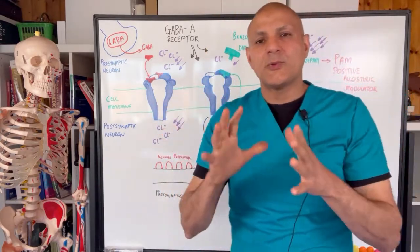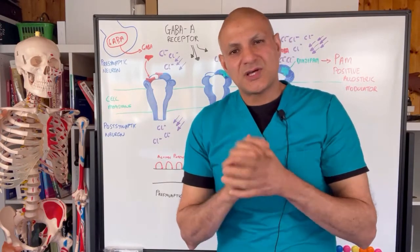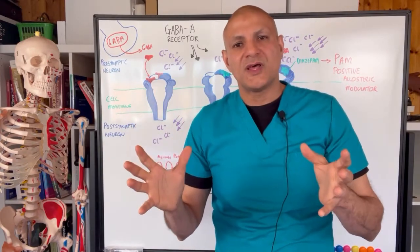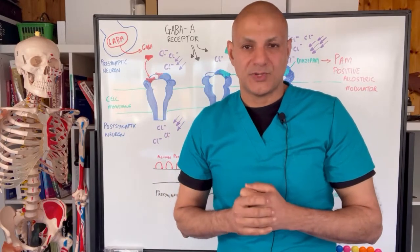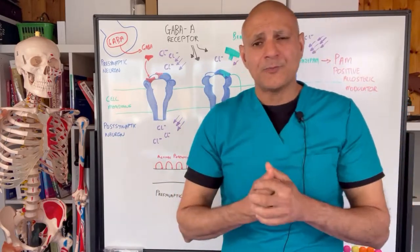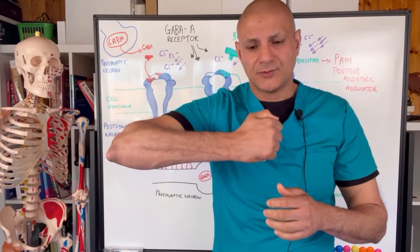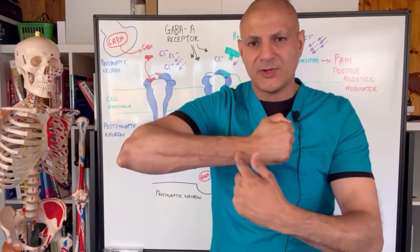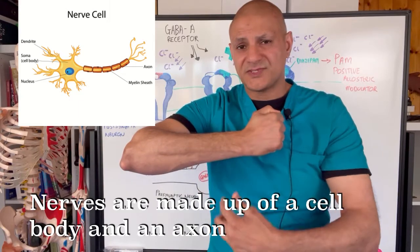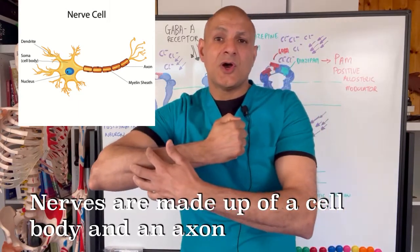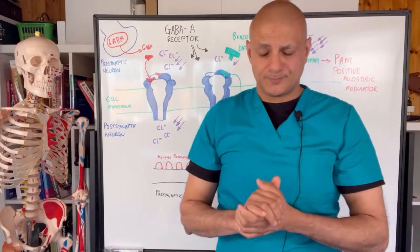Before we go any further, it's useful to have a quick revision of how nerves transmit information between themselves. Imagine my arm is a nerve cell — we have a cell body here, and we have an axon, which can be quite long, which facilitates the transmission of information over large areas in the body.